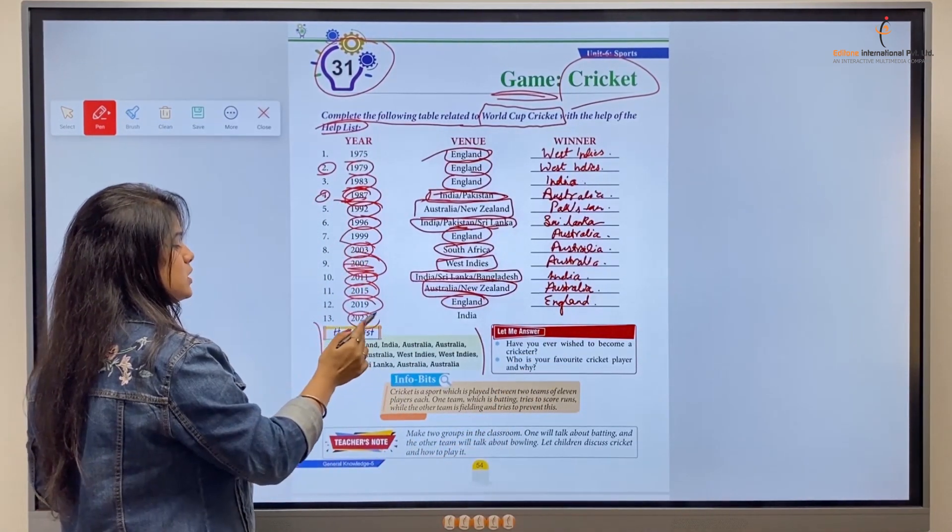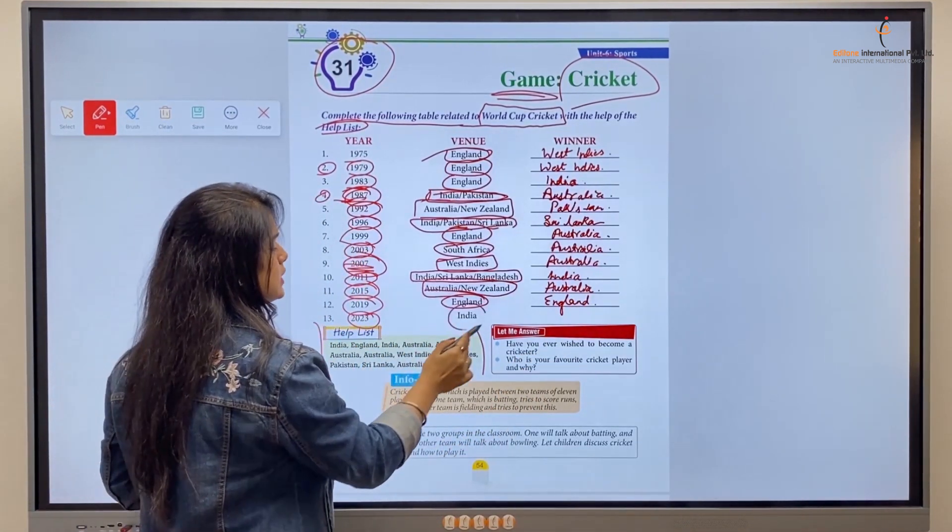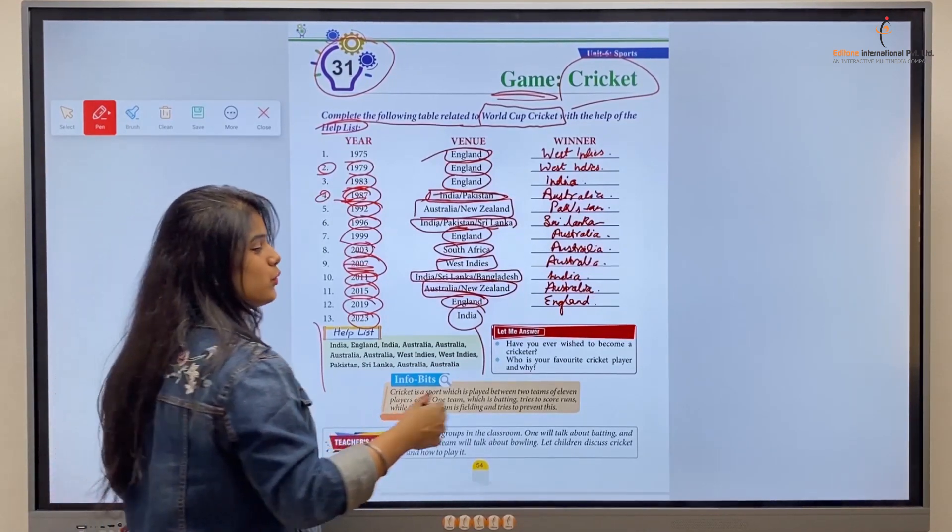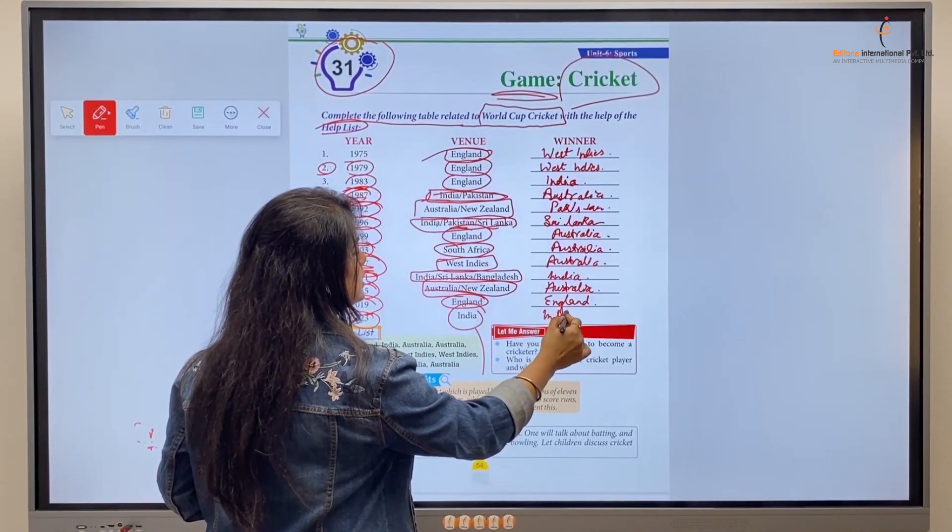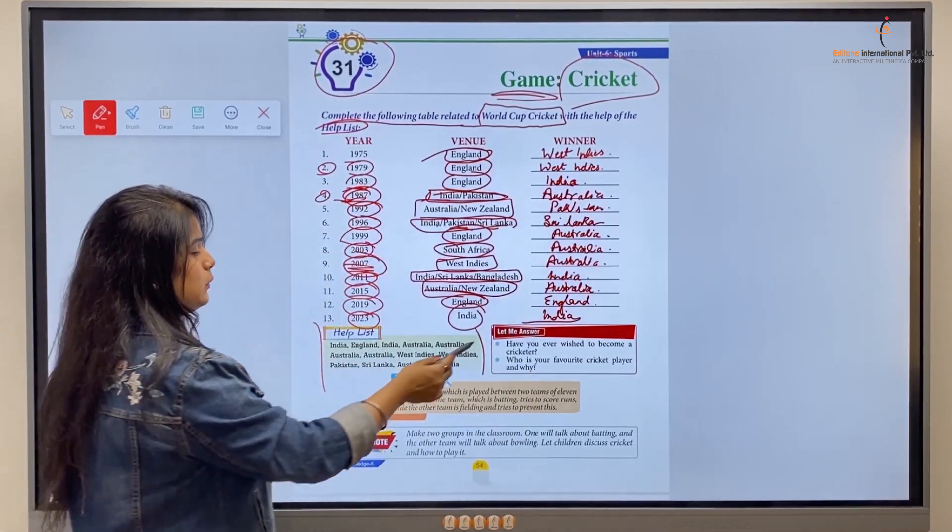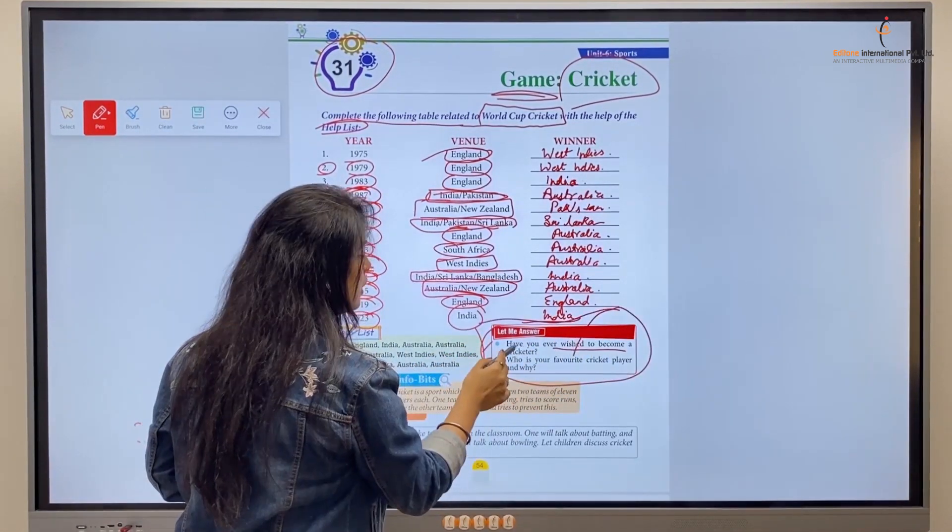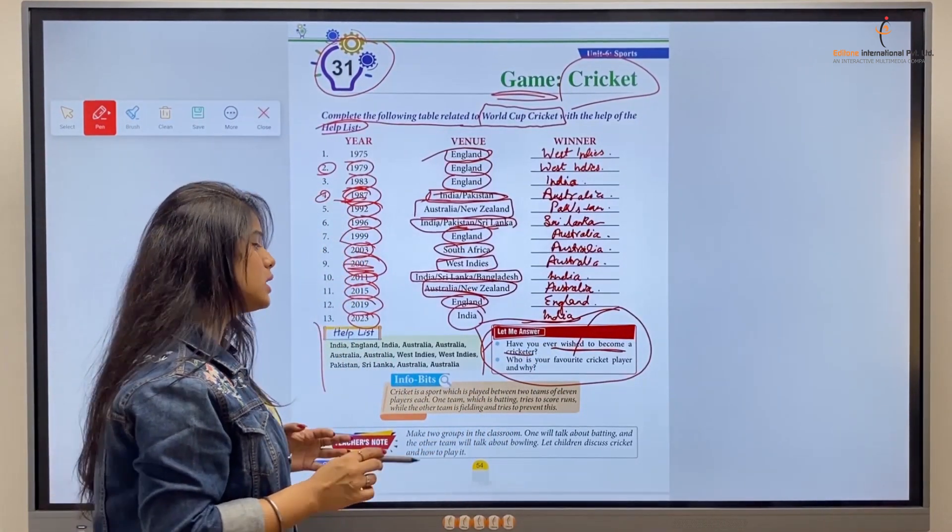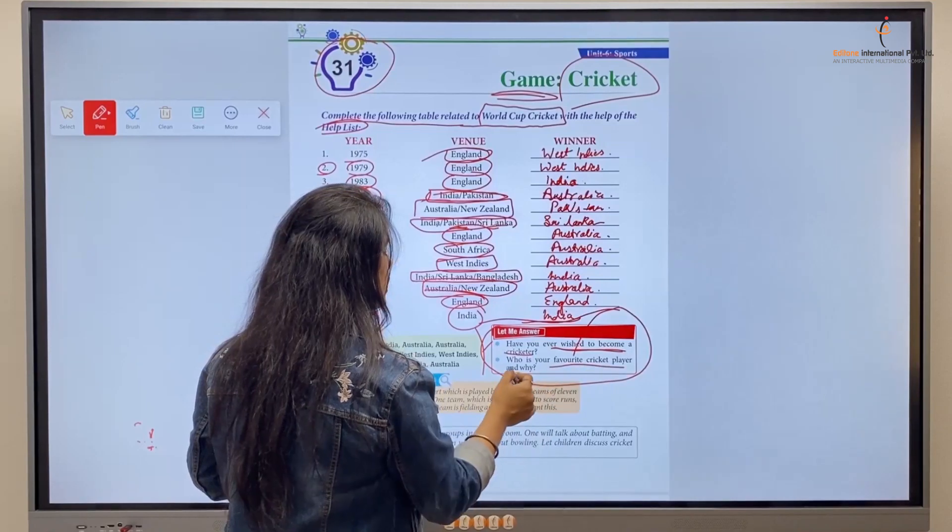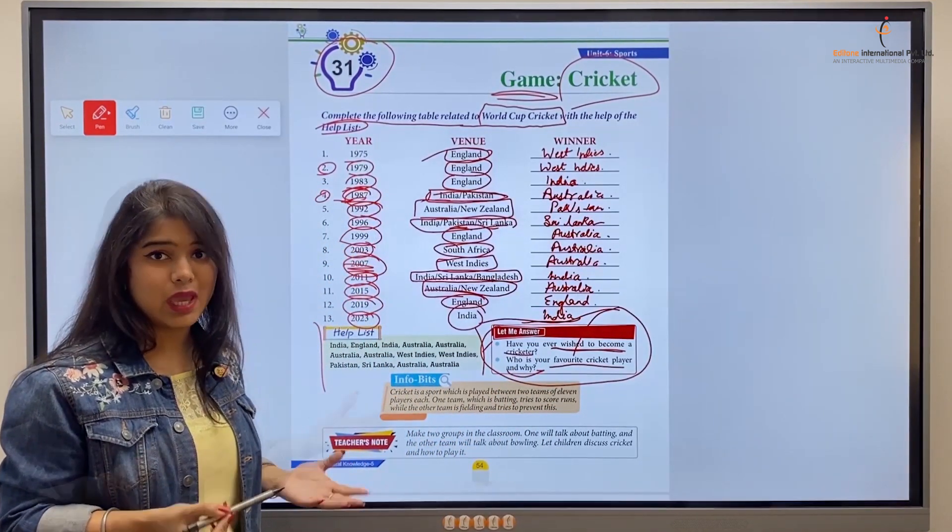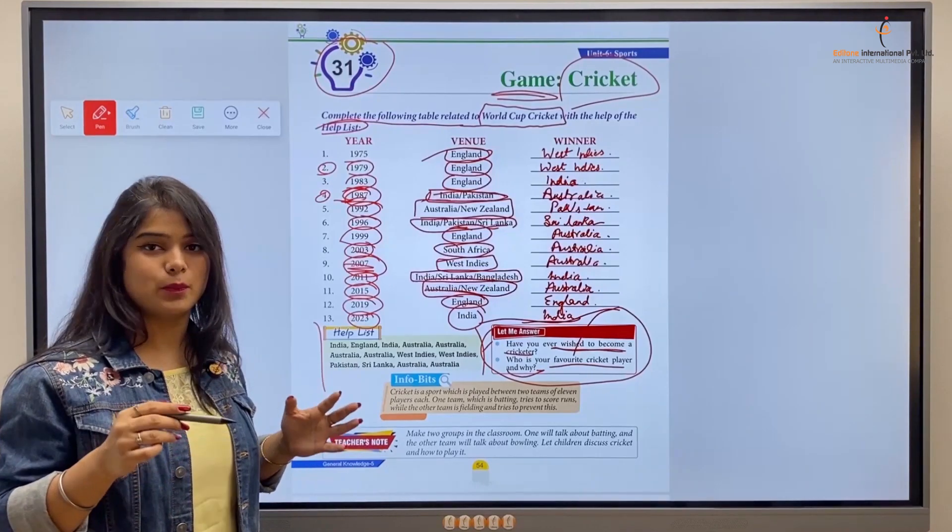Next, in 2023, the World Cup took place in India and the winner was India, so we'll write India, right kids? So now let's discuss the next questions. Number one: Have you ever wished to become a cricketer? Number two: Who is your favorite cricket player and why? Write down the reason and the player's name in your notebook.